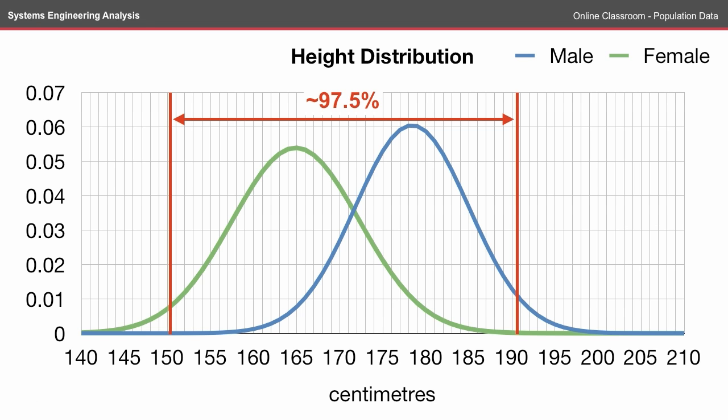If we look at that on the graph, you can see that the lower bound of the male population is within the range of the female population, and likewise the upper bound of the female population is within the upper bound of the male population.